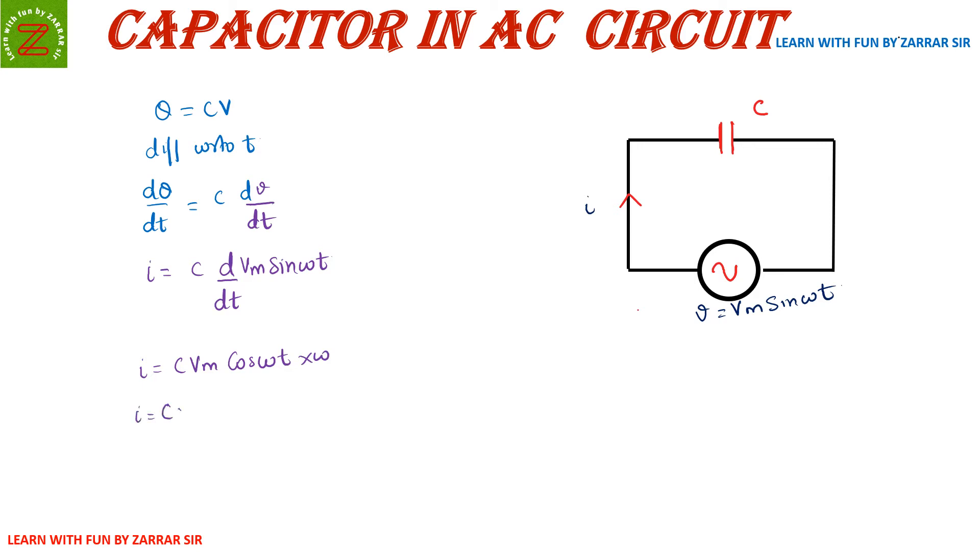Now I can write i = Vm upon - I'm trying to make this term the same as what we studied during resistor and inductor. So I'll be writing i = Vm upon - I'm using this ωC in the denominator, so 1/(ωC) × cos(ωt).